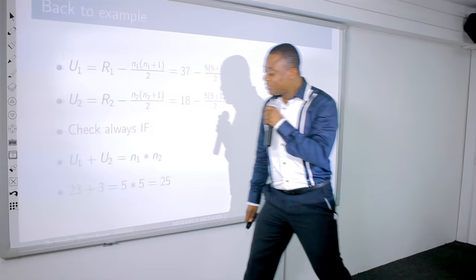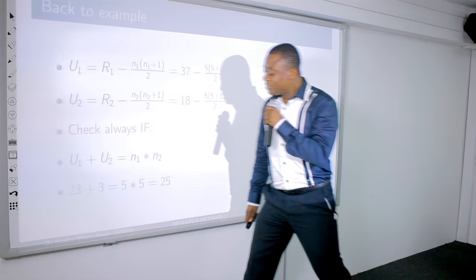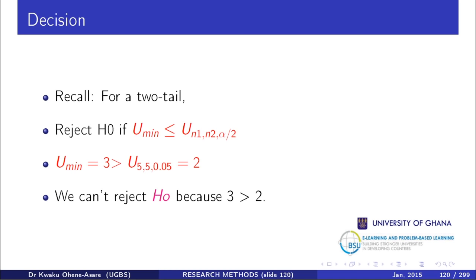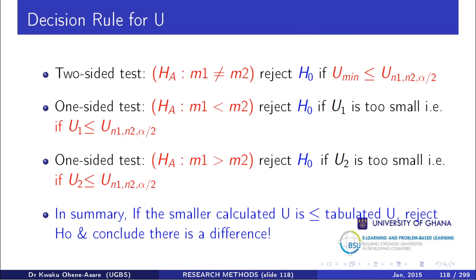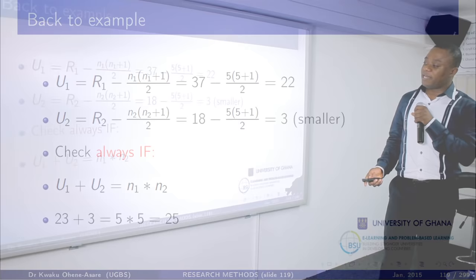Since the smaller calculated U (which is 3) is greater than the tabulated value (which is 2), we cannot reject the null hypothesis. We conclude there is no statistically significant difference. The null hypothesis states the medians are equal, and because we cannot reject it, we support the conclusion that there is no difference.